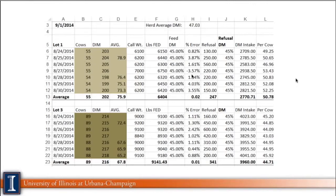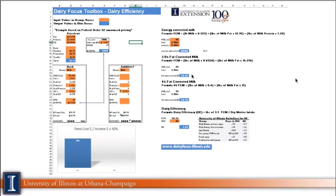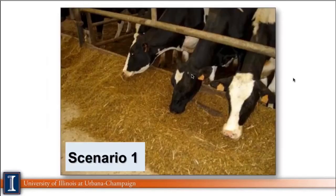When you have that number, you can use it in the tool. You can go to dairyfocus.illinois.edu to find the tool. I'm going to build up one scenario here. I'm pretty sure you already have at least 10 or 15 scenarios in your minds about how things can change.